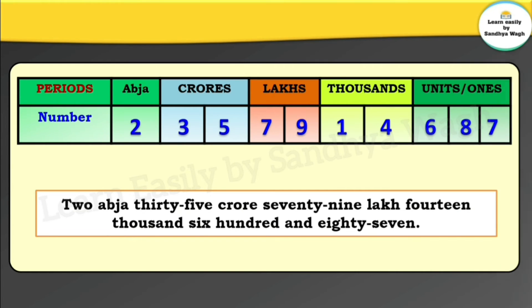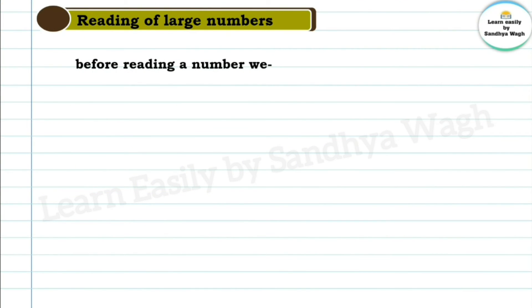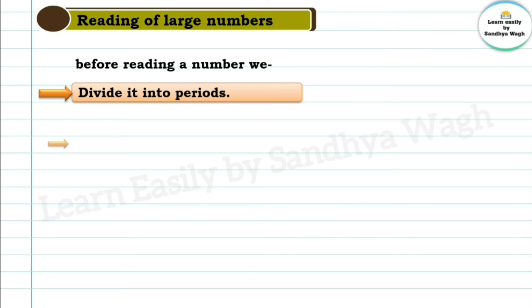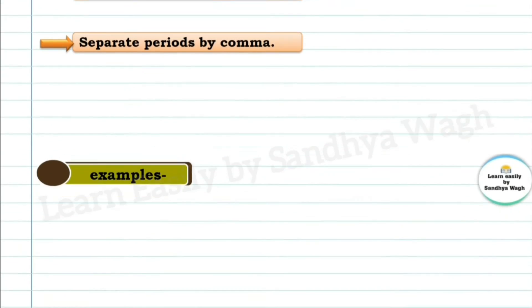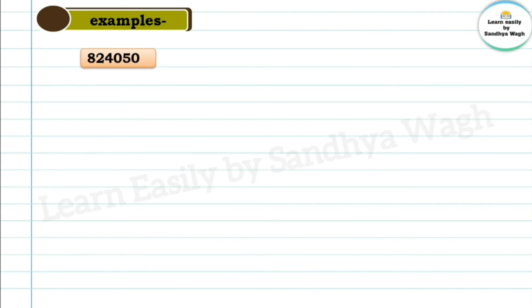Before reading a large number, we divide it into periods starting from the right, separating periods by commas. Let us take an example: 8,24,050. We start separating from the right side. The first period is the units period, which has 3 places — ones, tens, and hundreds — so we separate 0, 5, 0.